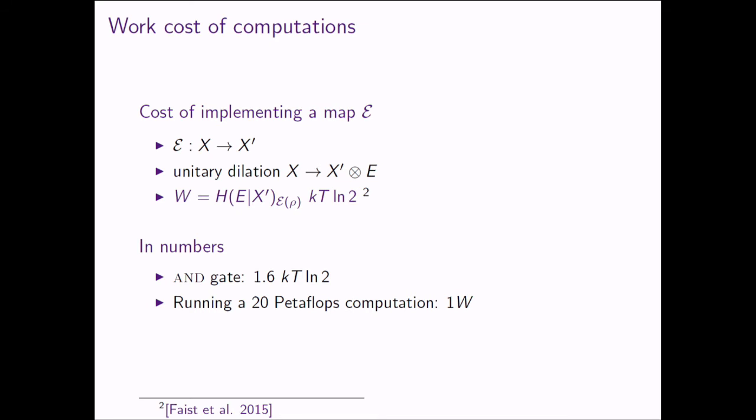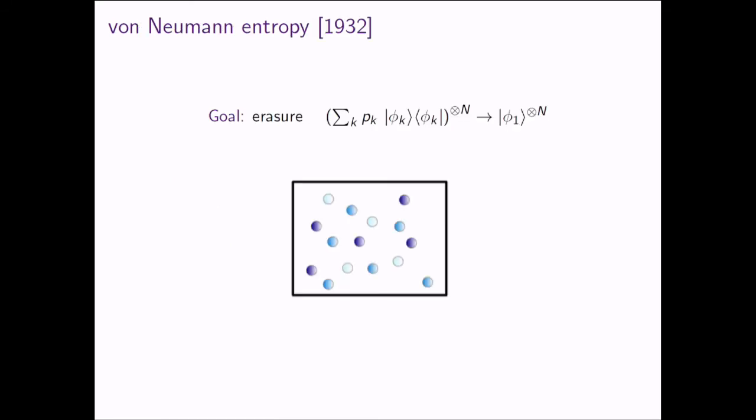These are all results in very specific settings, and later I want to generalize this whole approach. But before that, let's go back almost a century. Something I didn't know until a couple of years ago is that von Neumann entropy is called entropy for a thermodynamic reason.